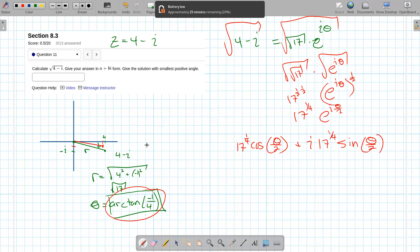plus i times 17 to the one-fourth times the sine of that theta over two. So let's calculate that, see if it's in the vicinity of the point I graphed here. And then that's the answer we want here. So really it's just an application of Euler's theorem, noting that the square root of a number in polar form means you just want half the angle and the square root of the radius.